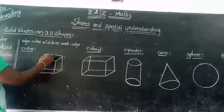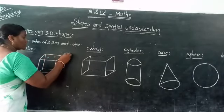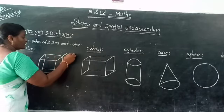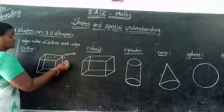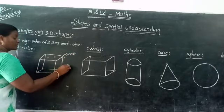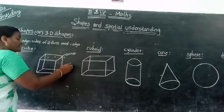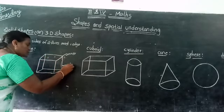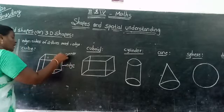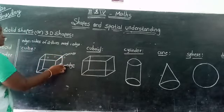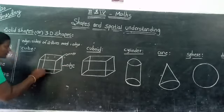Cube has 8 corners — this is a corner. Cube has 12 edges. An edge is the line where two faces meet — the midline between two faces. This is an edge.